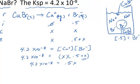And so when I divide, to solve for X, I'll just divide both sides by 0.5. And when I do that, the X equals 8.4 times 10 to the minus 8th.